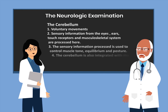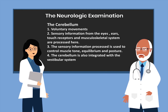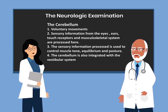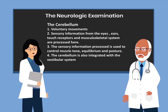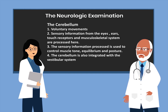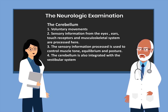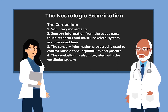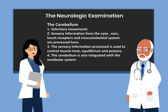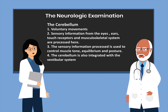The cerebellum is involved in voluntary movements. Sensory information from the eyes, ears, touch receptors, and the musculoskeletal system are processed in the cerebellum. The sensory information processed in the cerebellum is used to control muscle tone, equilibrium, and posture. The cerebellum is also integrated with the vestibular system.